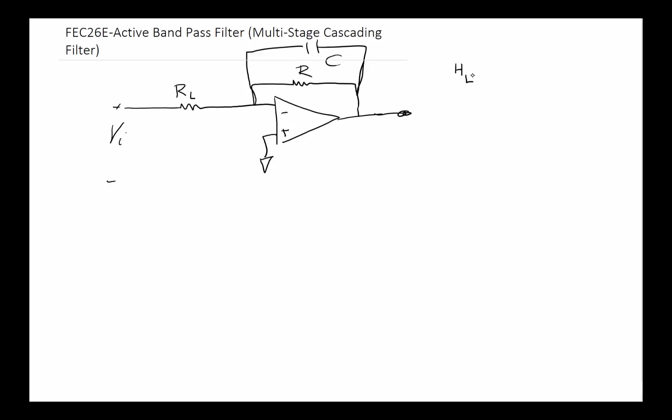If we write that from earlier work, we know that H(s) for this low pass filter will be equal to omega c of the low pass filter divided by s plus omega c of the low pass filter. Furthermore, omega c of a low pass filter equals 1 over RL times CL.